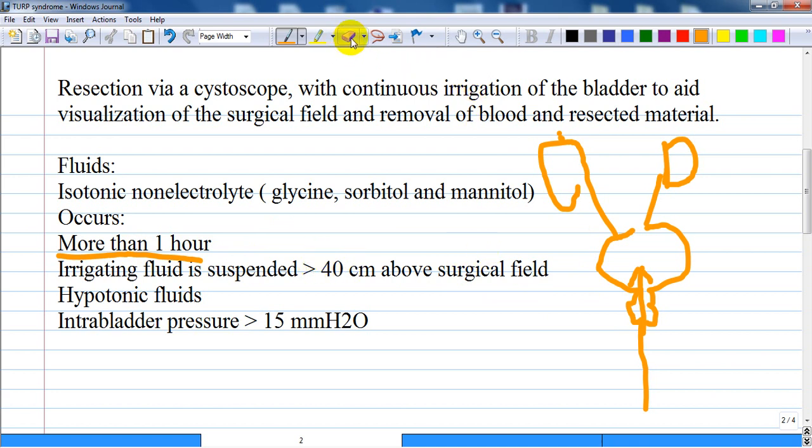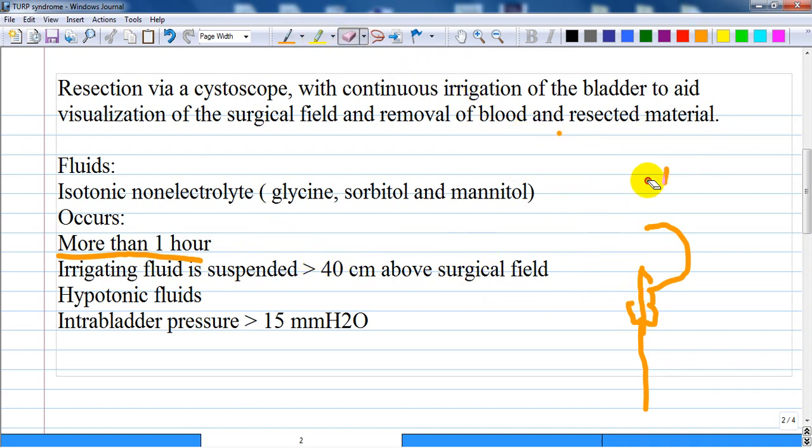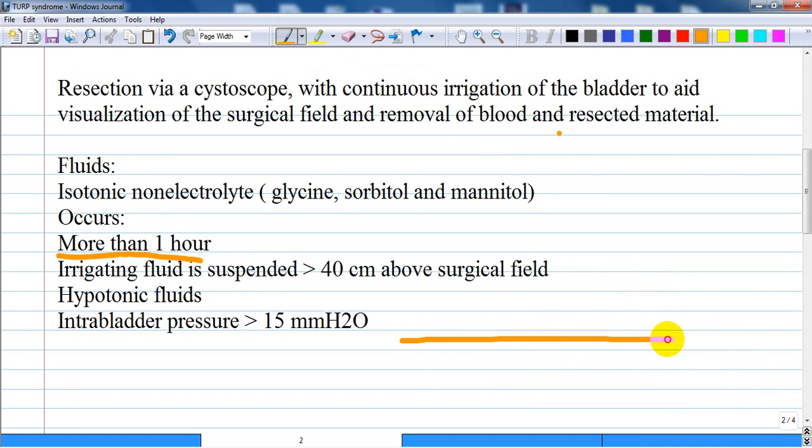It's also more likely when the irrigating fluid is suspended more than 40 centimeters above the surgical field. For example, if this is a patient and you are putting a bag with fluid 40 centimeters above, it becomes dangerous, especially when hypotonic fluids are used and the pressure in the bladder is allowed to increase above 15 millimeters of water.